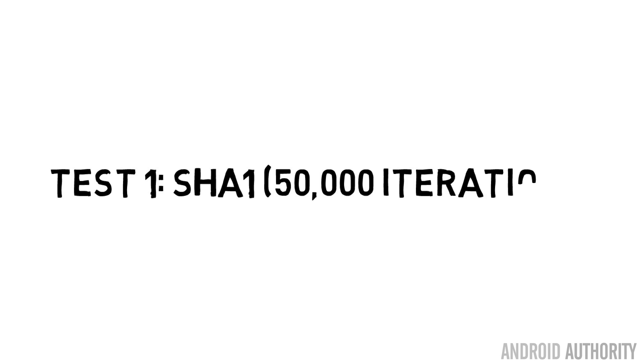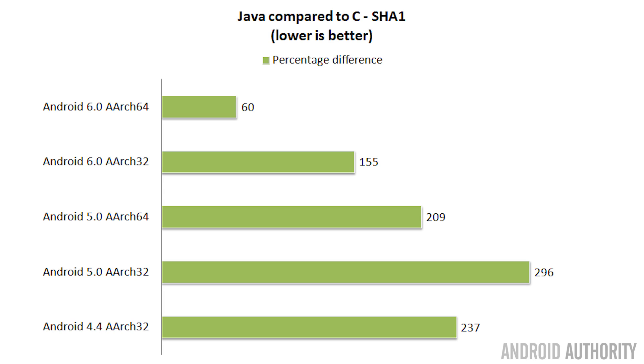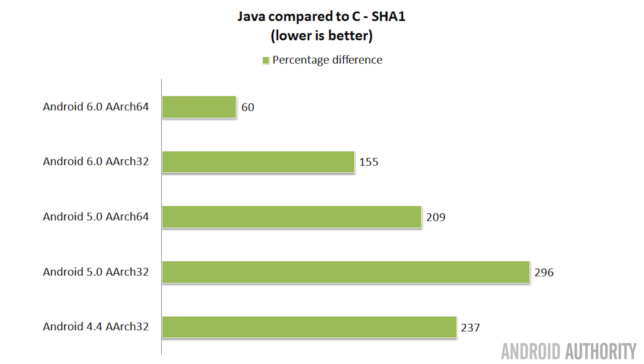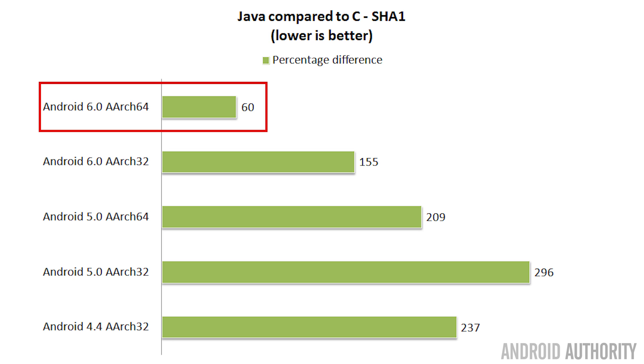The first test was to take a block of data and create an SHA1 hash. This shows the relative percentage difference between Java and C. Java is slower. In the worst case — on an Android 5 32-bit device — it was around 300%, meaning four times slower. Moving through the devices, 64-bit Android 5 and 32-bit Android 4.4 are next, but the fastest was Android 6.0 on a 64-bit processor. For a real-world application like creating cryptographic hashes, Java is about 60% slower than C on modern 64-bit processors, and up to four times slower on older devices.